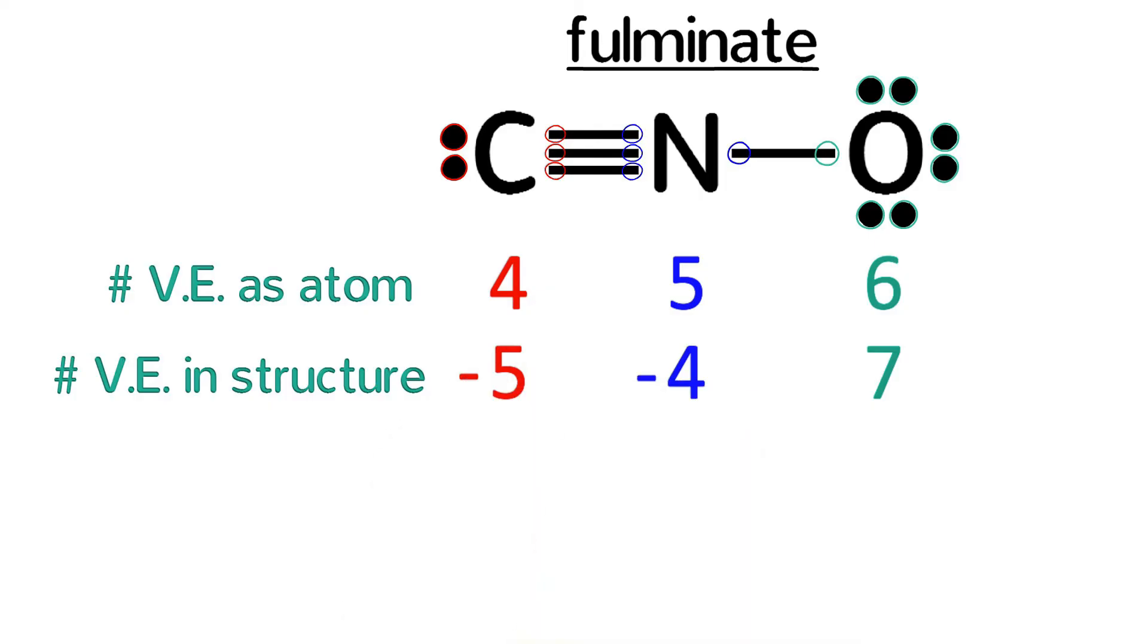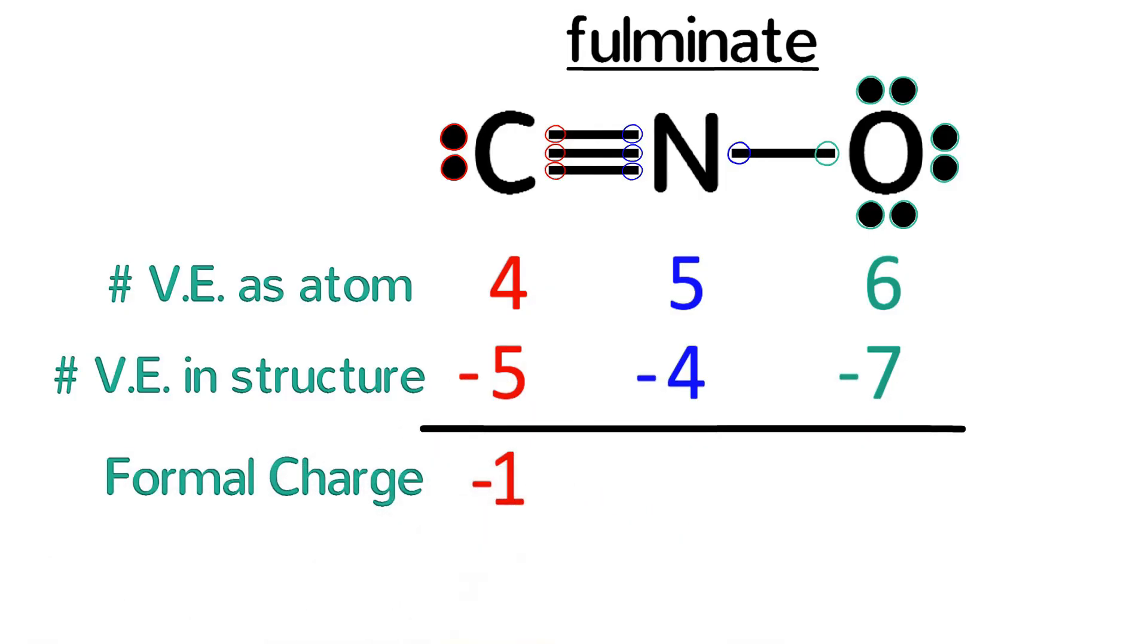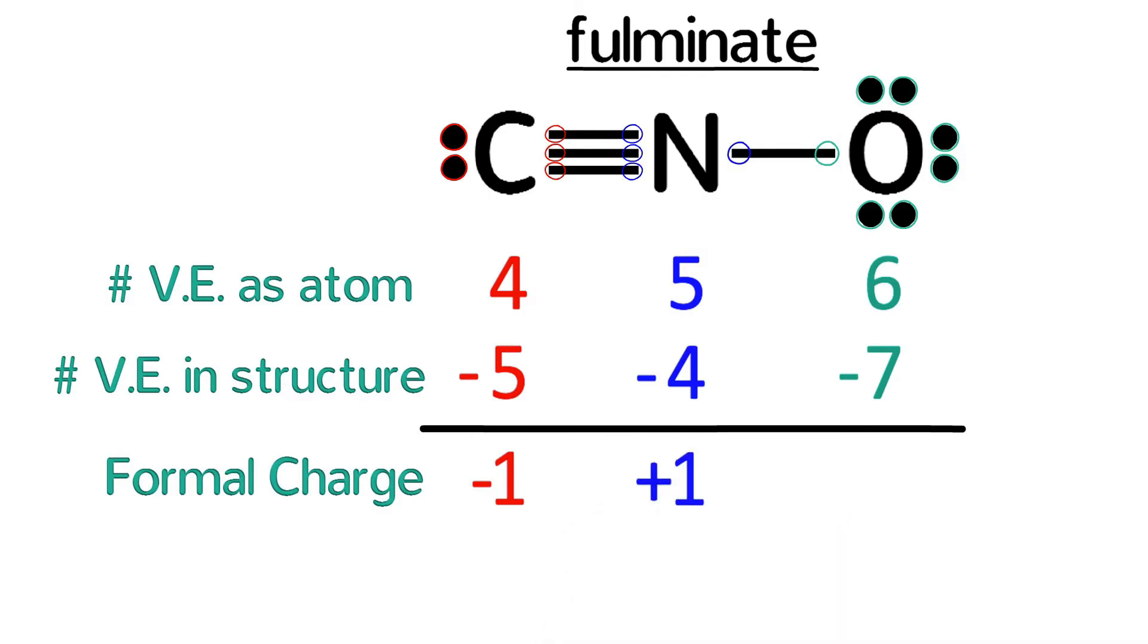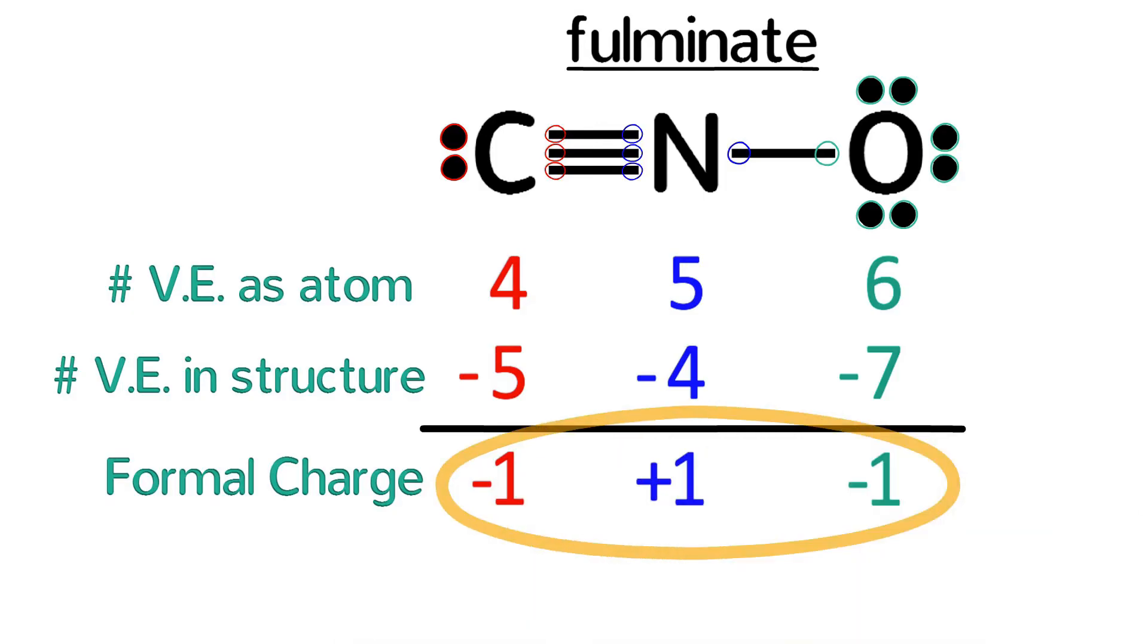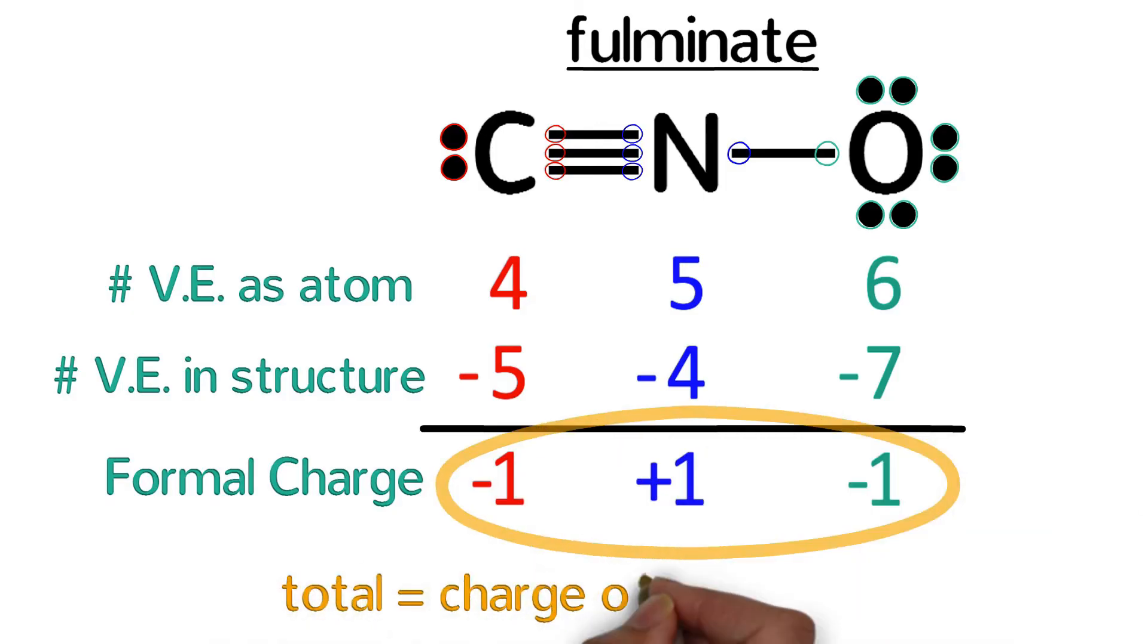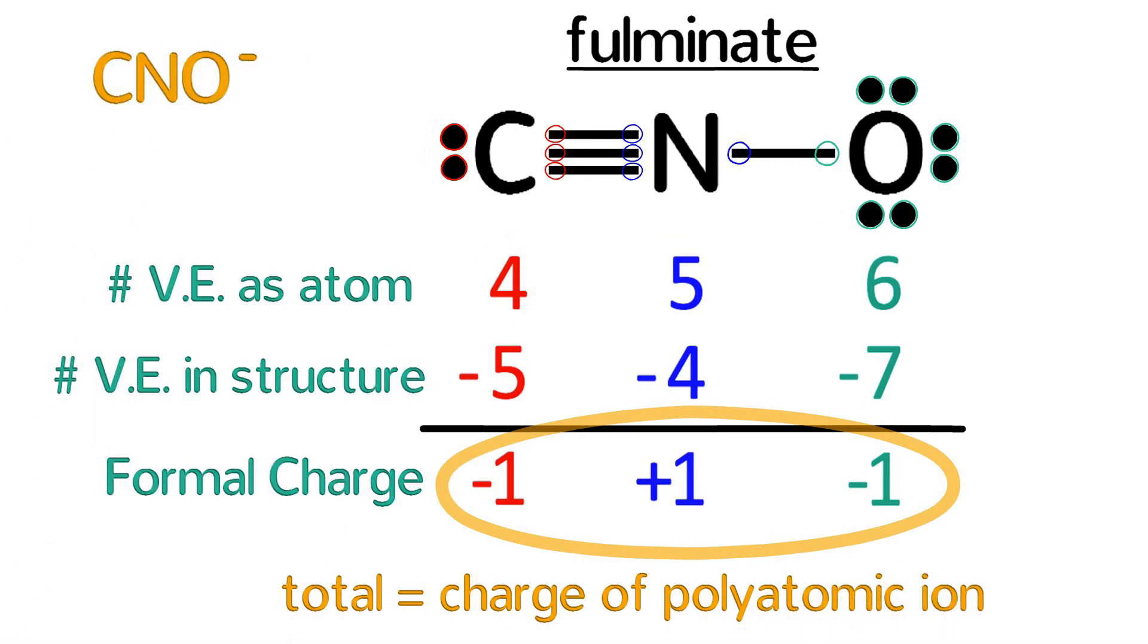Last, we subtract these to calculate the formal charge, which is negative one for carbon, positive one for nitrogen, and negative one for oxygen. Once again, notice that if we add all the formal charges together, the total is the charge of the polyatomic ion, so fulminate has a negative one charge.